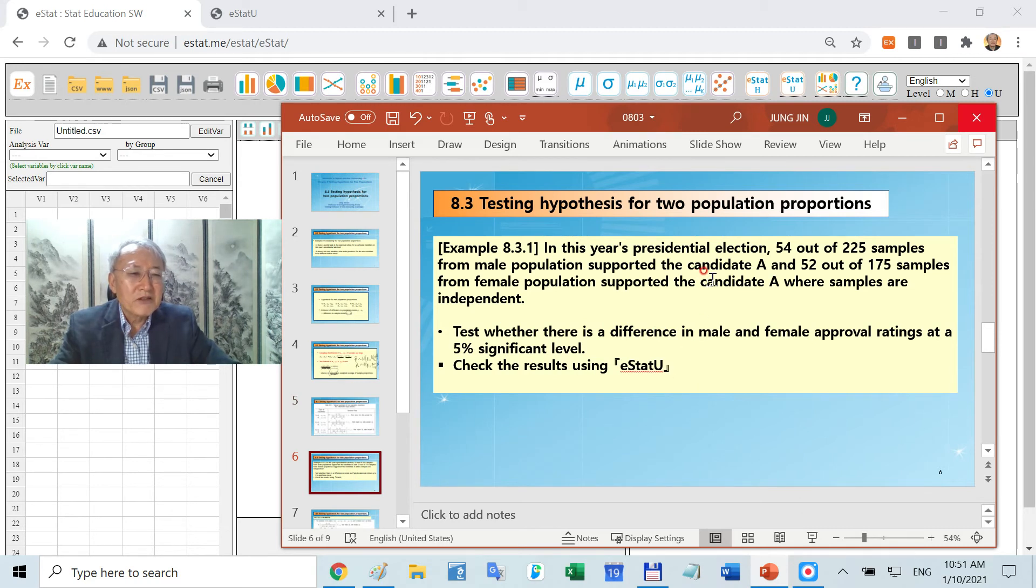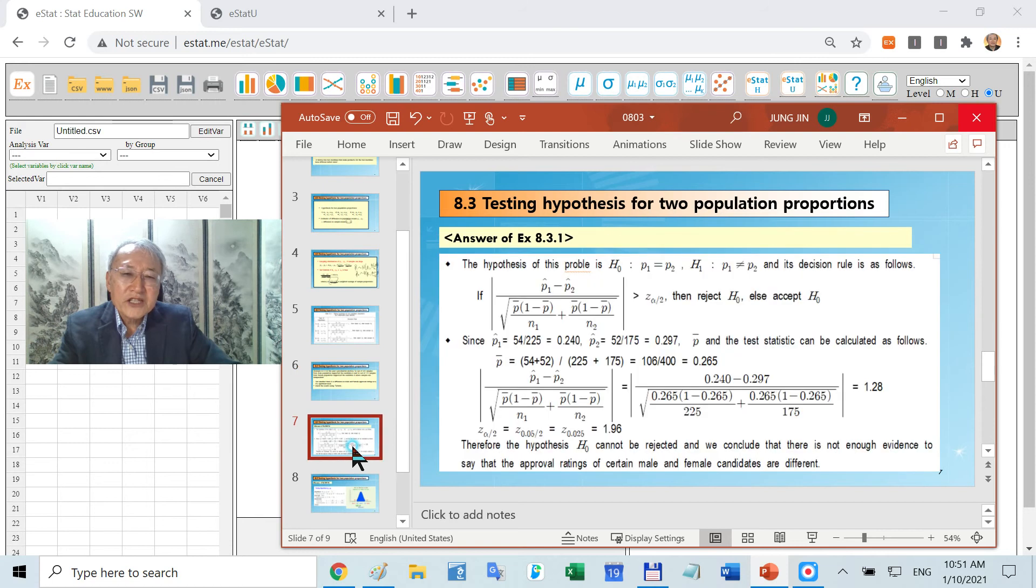Let's consider the example. It's an election problem. You collect samples: 54 out of 225 samples approved some candidate A. And from female population, 52 out of 175 are in favor of the candidate A. We want to check whether there is a gender difference. How can you do that? If you are using East and U, it is simple. But before we get into there, let's do it by hand.